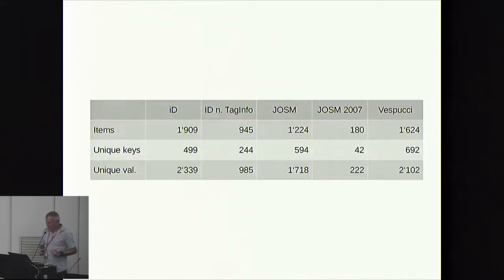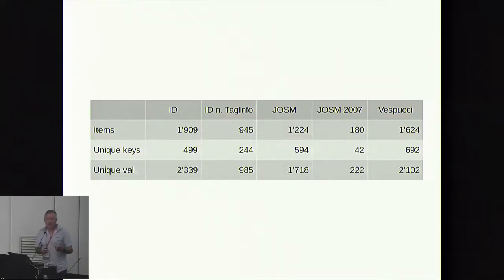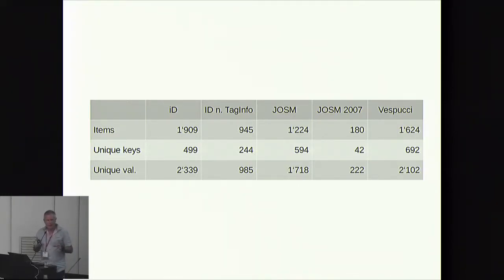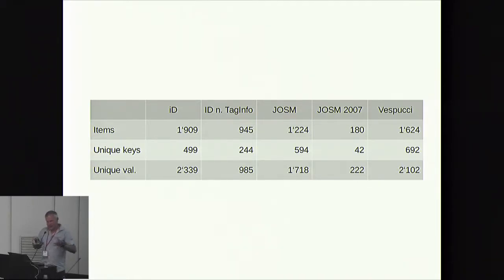iD pulls values and keys from tag info. If you don't do that, you get substantially lower numbers — roughly half. You could argue that this violates the 'curated' part of presets. When you're using iD, you don't actually know that this is not something that somebody has looked at. So that's a bit problematic. The other question is: iD has 2,000 presets — do they actually matter? Is this perhaps just 'mine's longer than yours'?